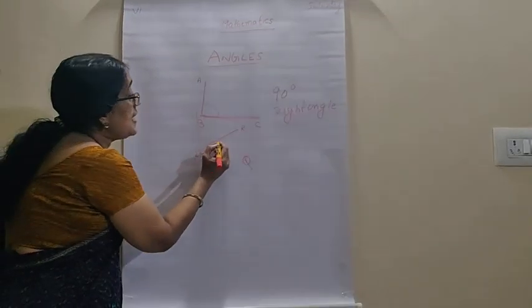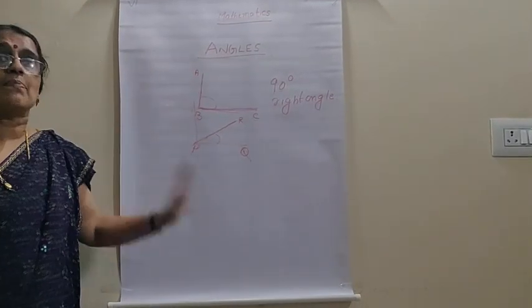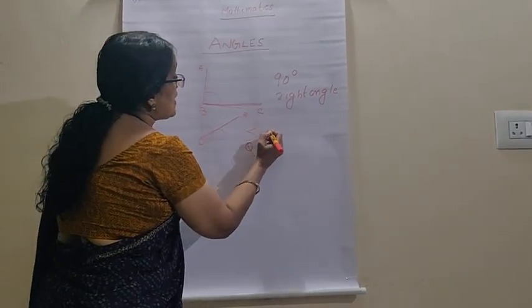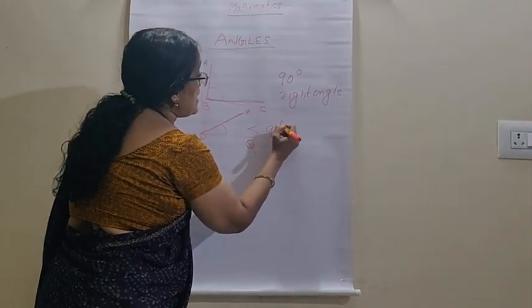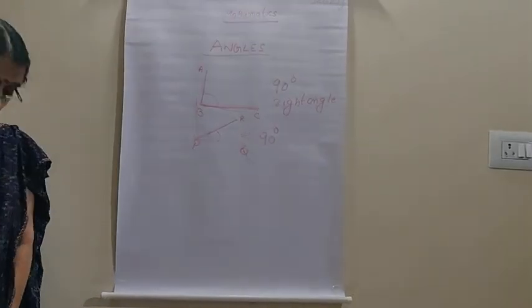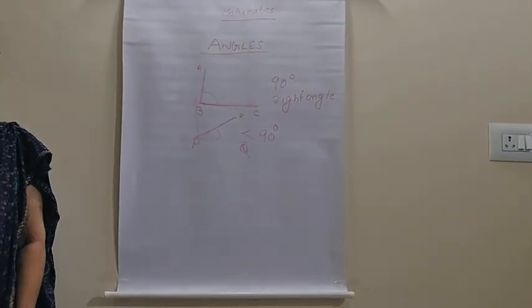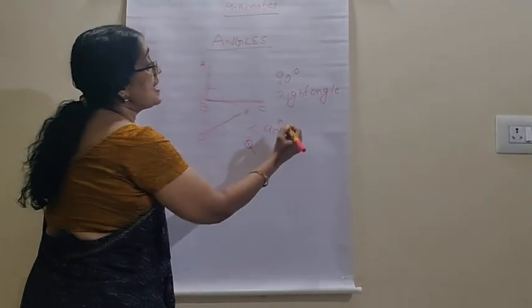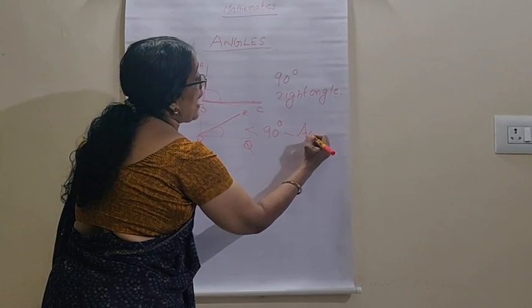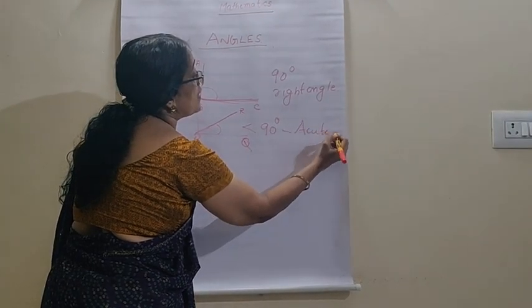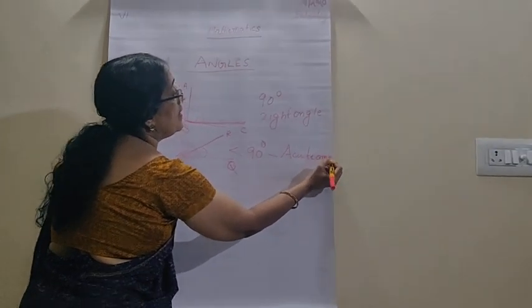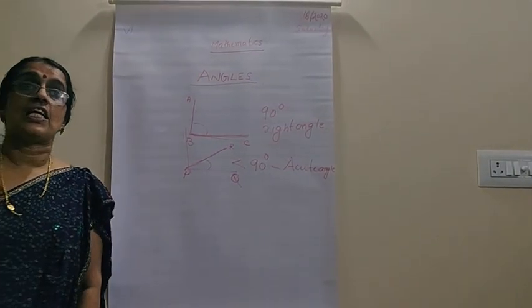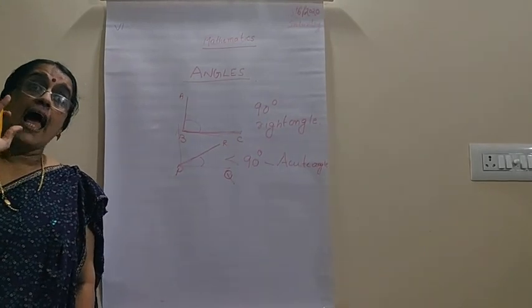Right. So, this angle, this angle, whose measurement, we can say that, it is always less than 90 degrees. Understood. Always less than 90 degrees. So, we say that, it is acute angle. What we say? Acute angle. So, angle whose measurement is less than 90 degrees, we can say that, it is acute angle.